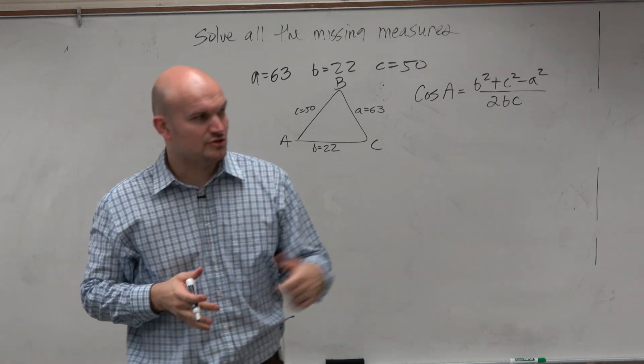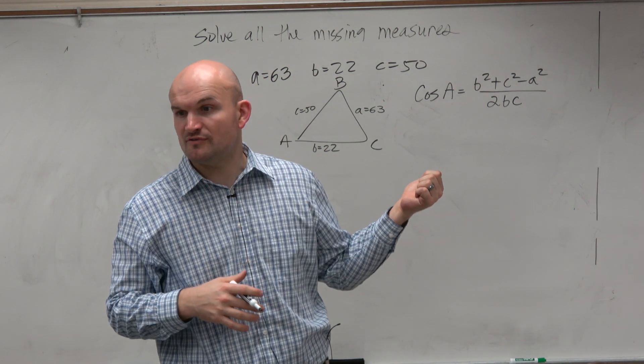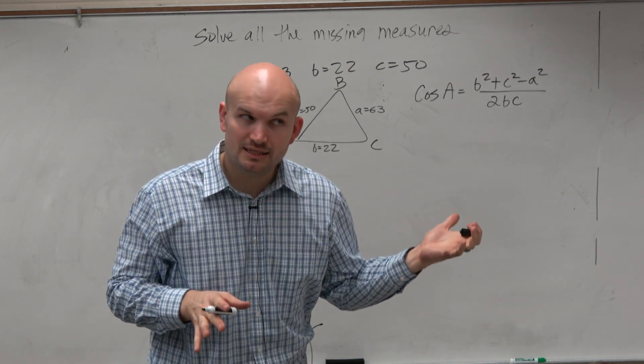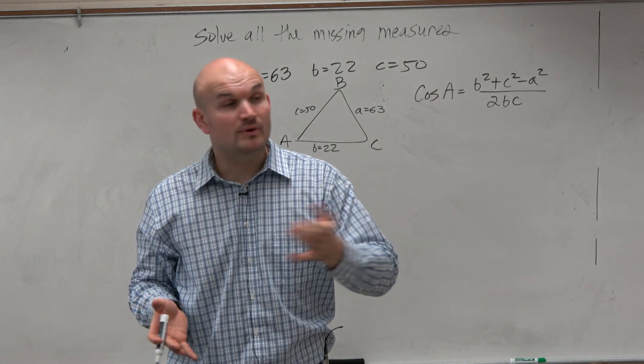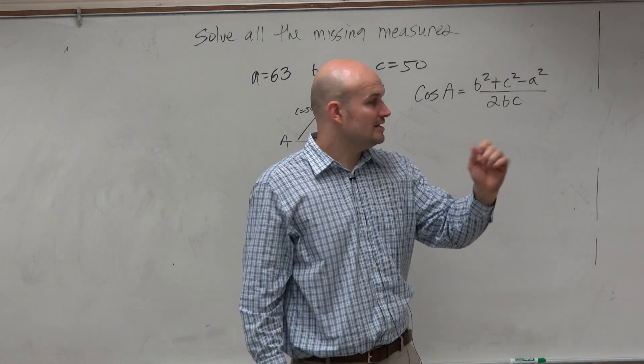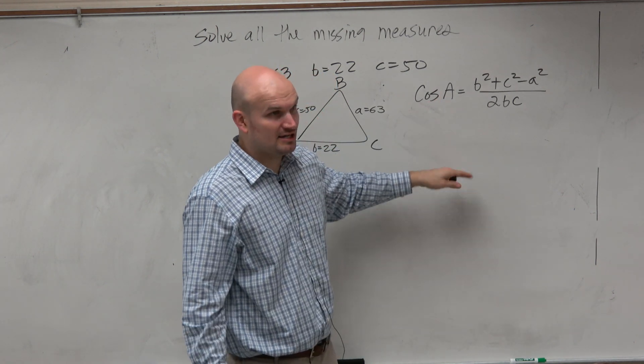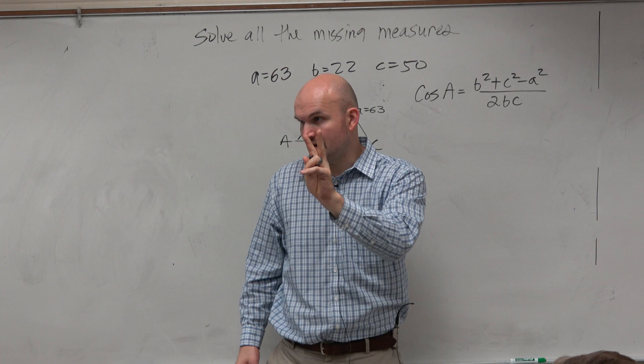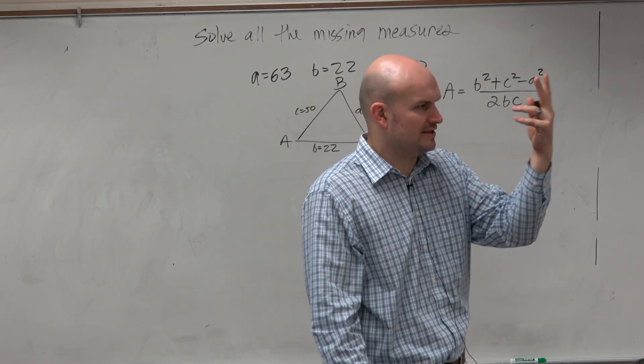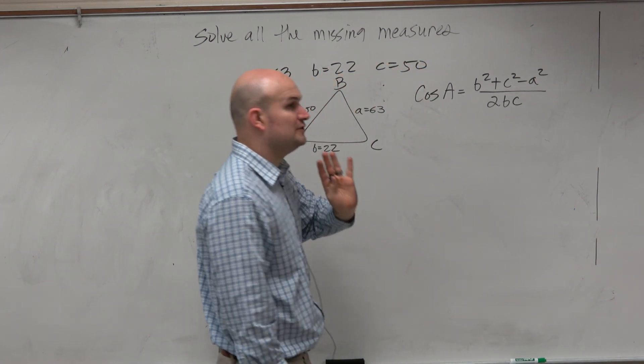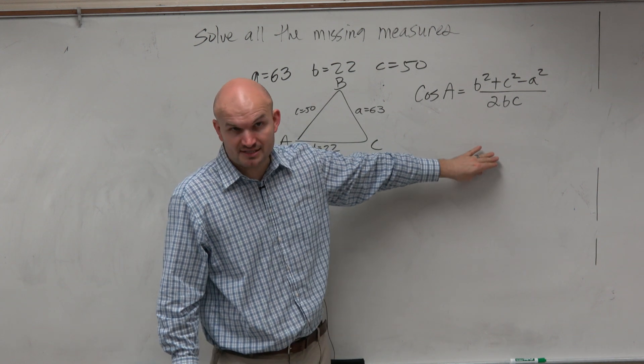Now should we just go ahead and plug in our information we know and solve for A? Kind of. Depends. We could do that if that's the way you want to solve the triangle. Meaning, if you want to find cosine of A and cosine of B, because really, don't we only need to find two angles? Because then we can always subtract from 180 to find the third angle.